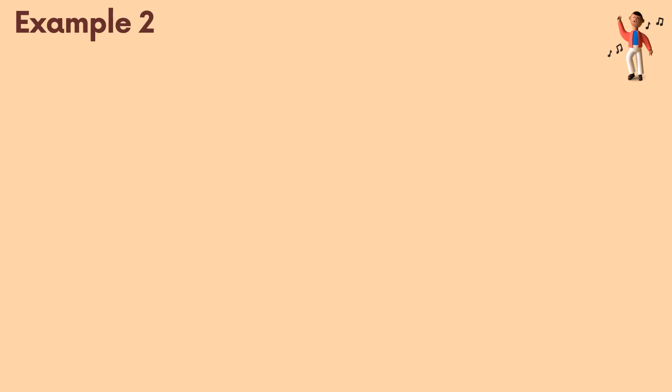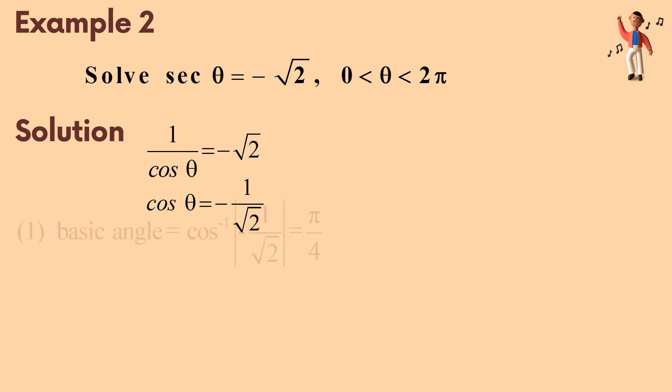Example number 2. Sec theta equal to negative √2. The range is 0 until 2 pi. The solution is 1 over cos theta. So, it becomes cos theta equal to negative 1 over √2. Firstly, we must find a basic angle. And we get pi over 4.